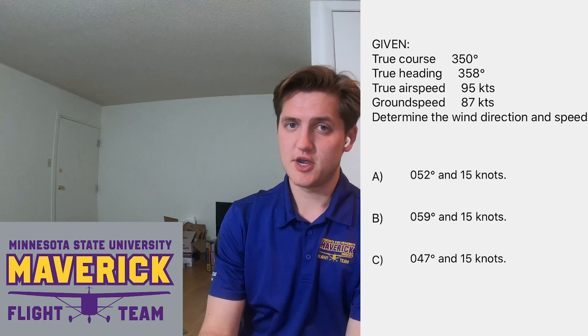We need to determine the wind direction and speed based on the given values. We have a true course of 350 degrees, a true heading of 358 degrees, a true airspeed of 95 knots, and a ground speed of 87 knots. We need to take all this and put it together in our E6B.